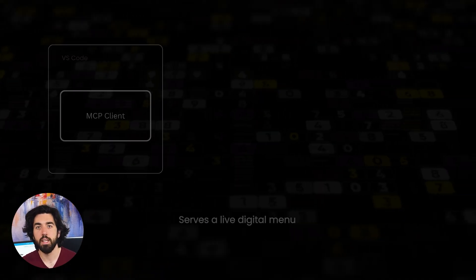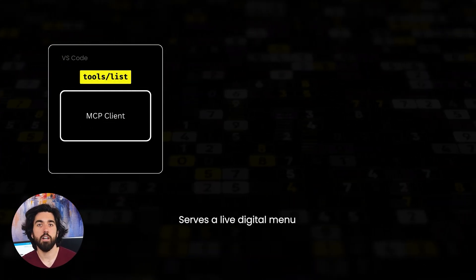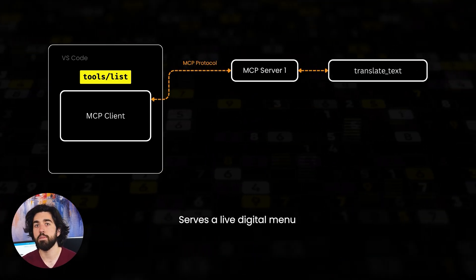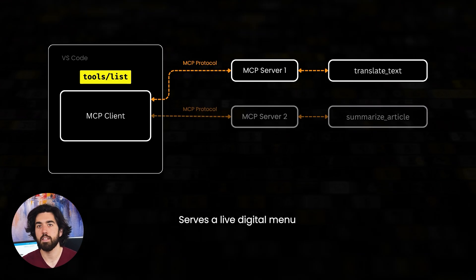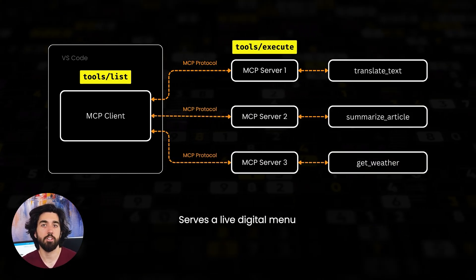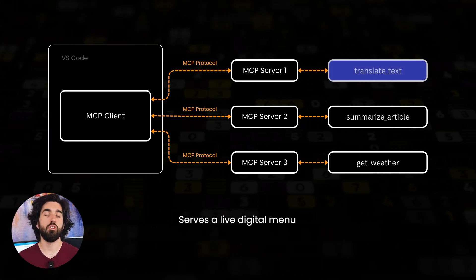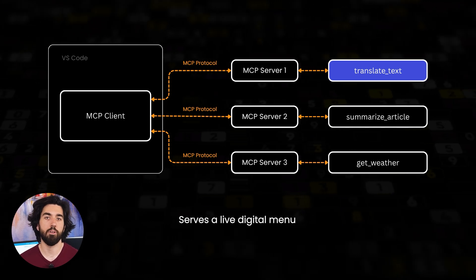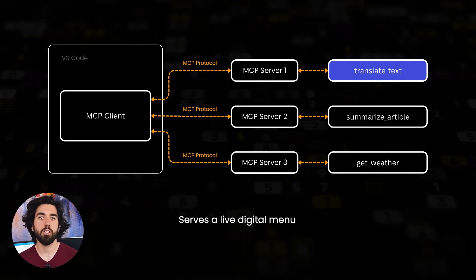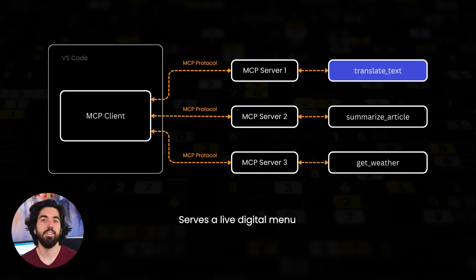MCP flips that model. Instead of frozen paperwork, it serves a live digital menu. On startup, the app's built-in MCP client calls tools.list, grabs the current lineup — maybe translate text, summarize article, get weather, whatever — and later hits tools.execute to run whichever one it needs. If a teammate drops a brand new tool onto the server at 3 in the morning, that menu refreshes automatically on the very next launch: no spec rewrites, no redeploys, no stale instructions, and nothing breaking.